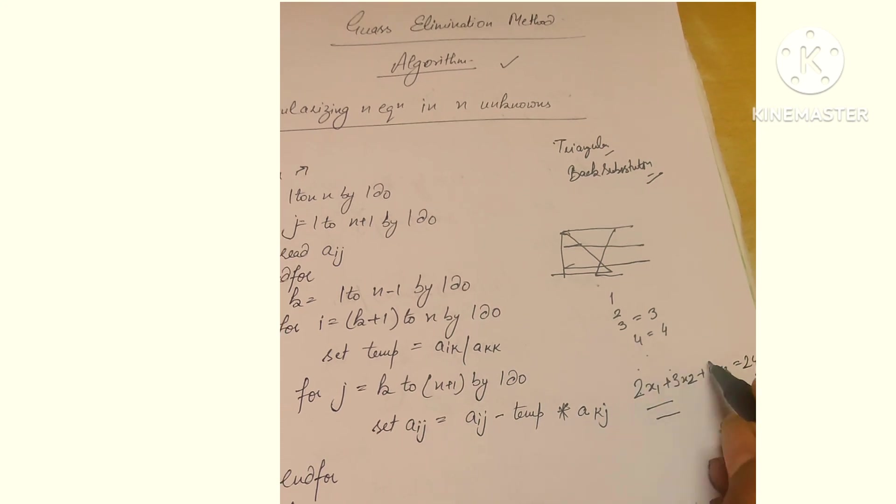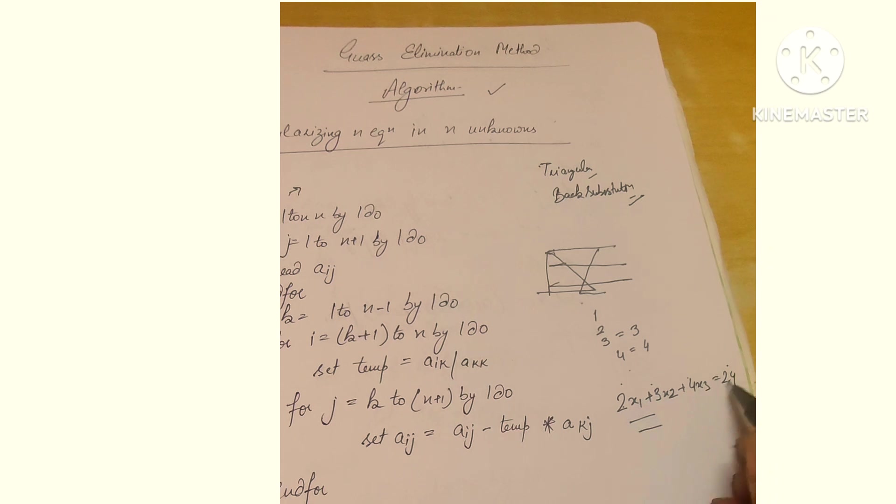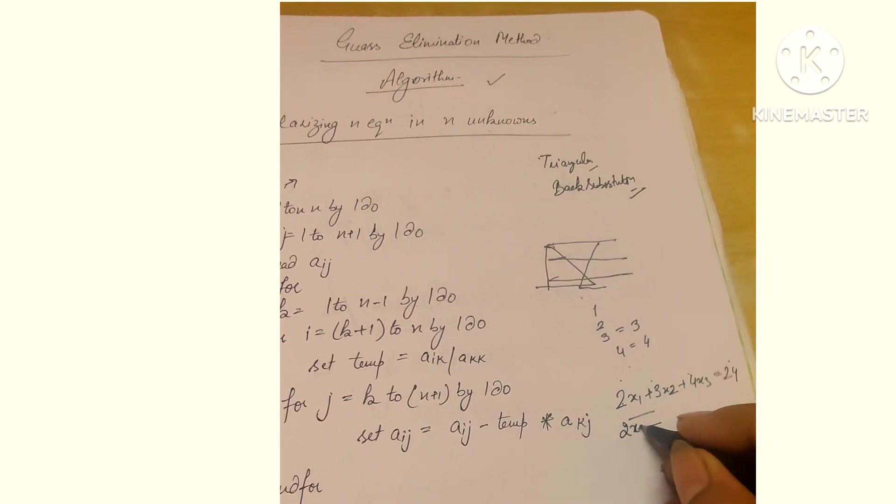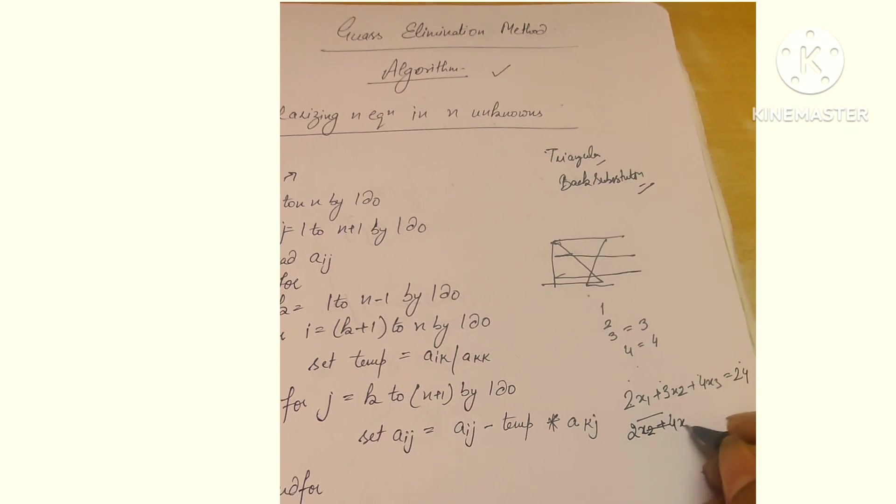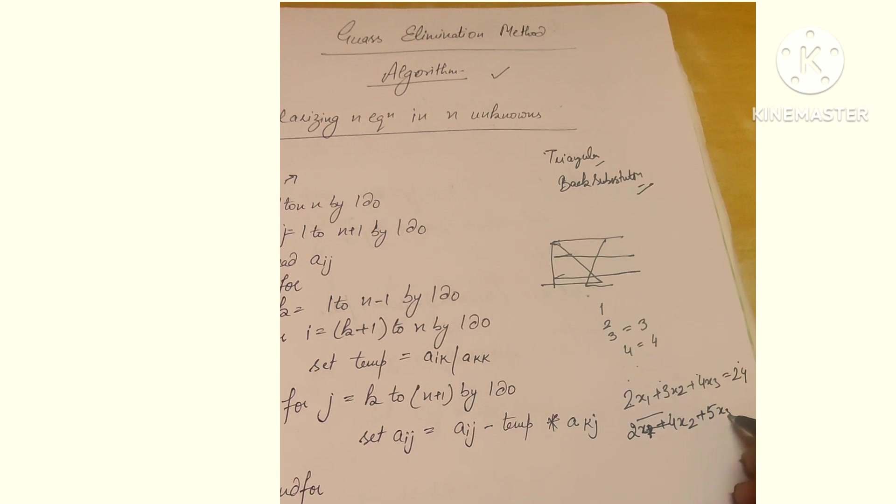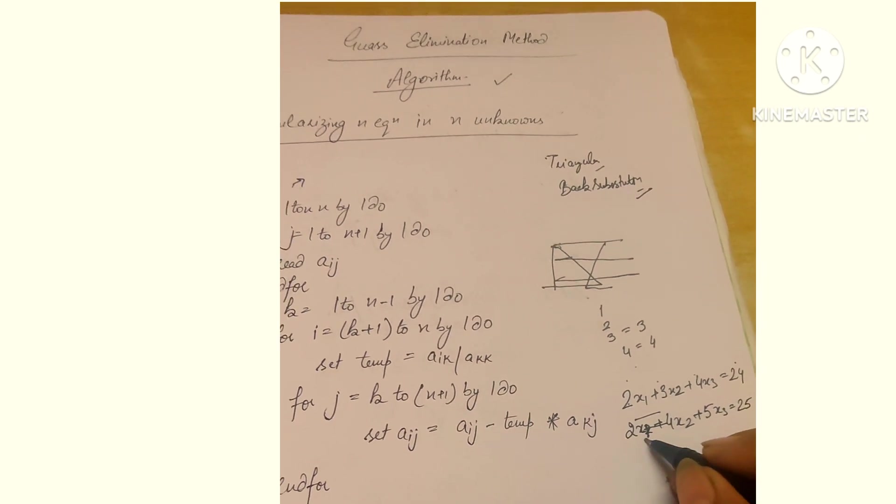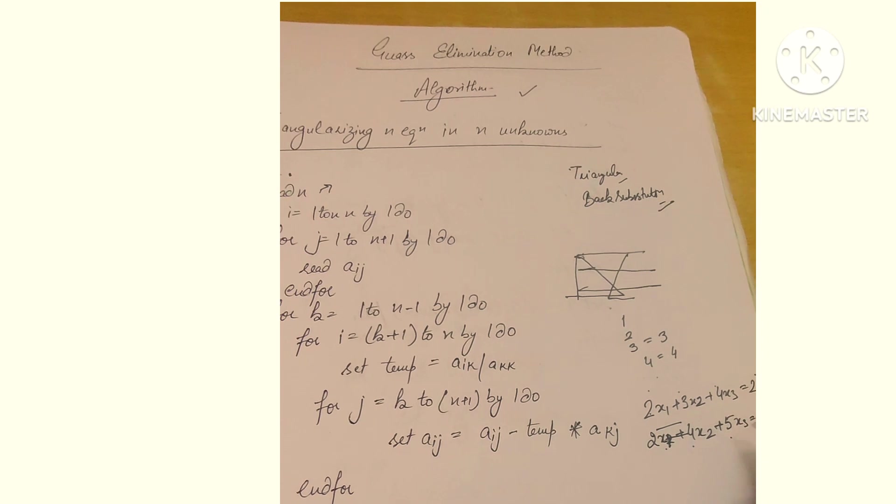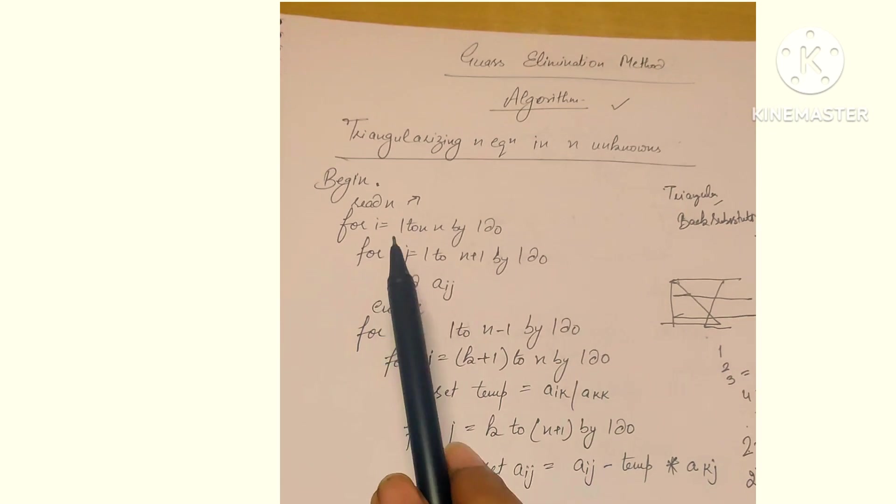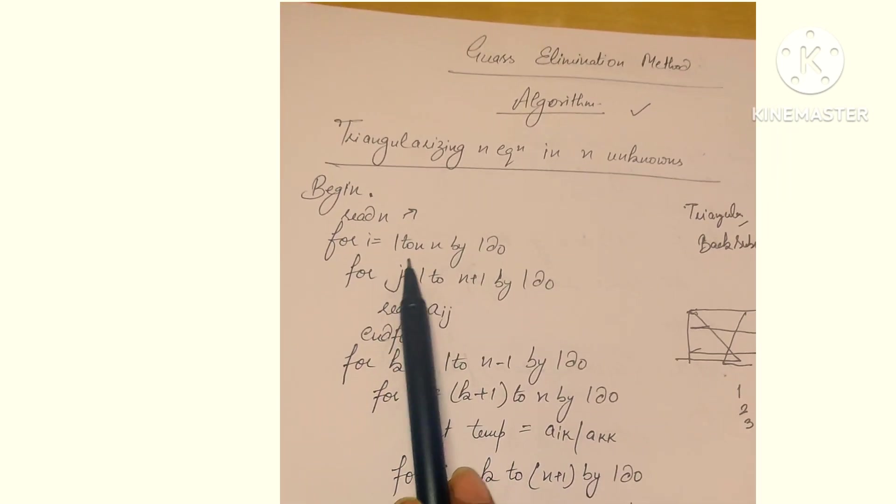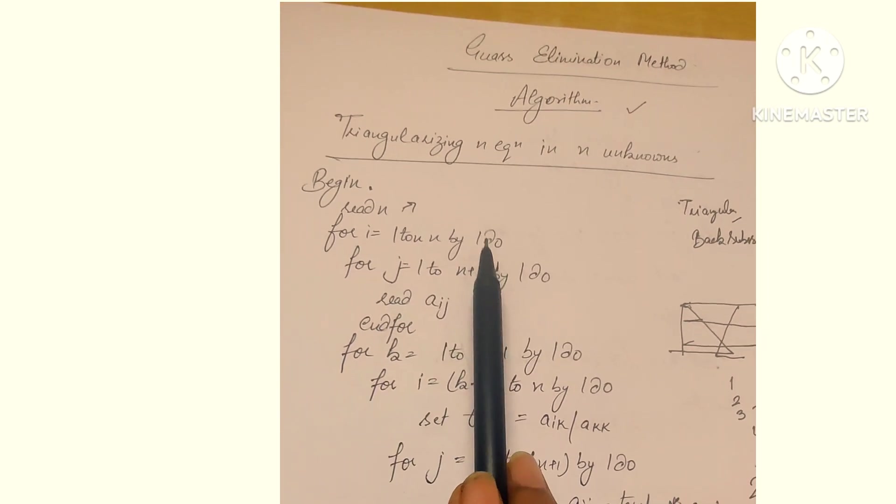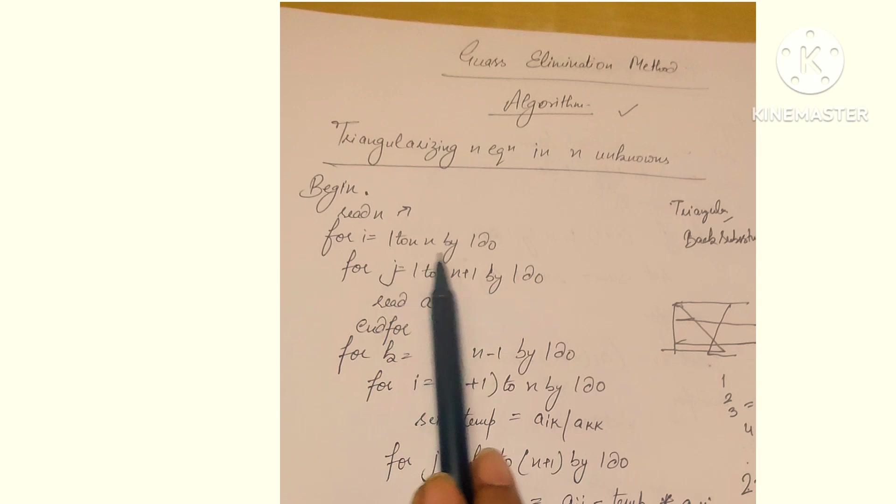Why are we taking two loops? First, we need to read the matrix elements. For example, if we have a matrix, the elements must be read. If there are equations, every matrix has elements: a11, a12, a13, and the equality part. Like 2x1 + 4x2 + 5x3 = 25, that's a21, a22, a23. We need two loops because there's shuffling in both. For i equals 1 to n means starting from the first equation.